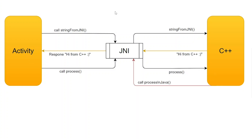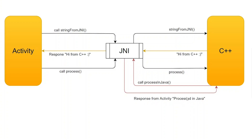C++ will communicate with the JNI to process it in Java, and then the response will be returned from the JNI to the C++ class — that it is processed in Java and this is the result. Then C++ will use that result, process it, and return the response back to the JNI.